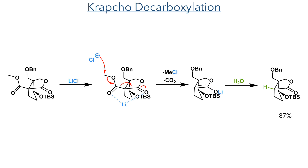This product was then taken forward to a Krapcho decarboxylation. The reaction is carried out in wet DMSO, and lithium present as lithium chloride first coordinates between the two ester groups. This increases electrophilicity and allows chloride to act as a nucleophile to attack the methyl ester. This triggers expulsion of carbon dioxide, lost as gas together with methyl chloride. The resulting enolate is then protonated by water present in the DMSO, forming the target compound in an 87% yield.